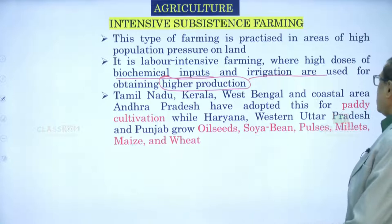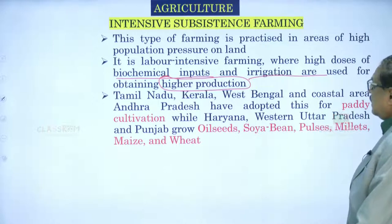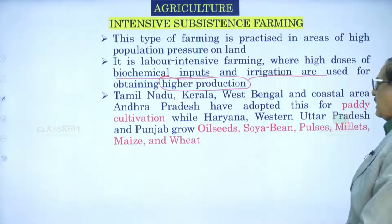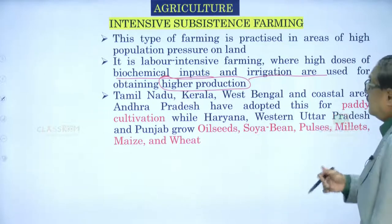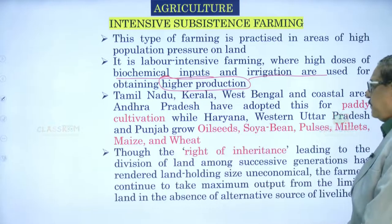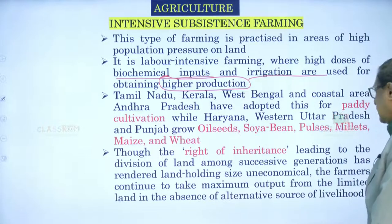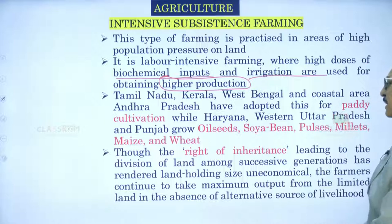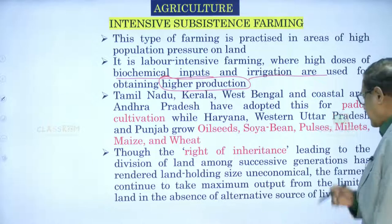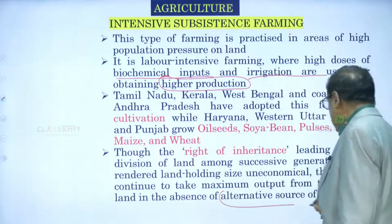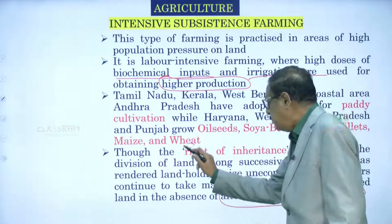Tamil Nadu, Kerala, West Bengal, and coastal Andhra Pradesh have adopted intensive subsistence farming for paddy cultivation, while Haryana, western Andhra Pradesh, and Punjab grow oilseeds, soybean, pulses, millets, maize, and wheat this way. The right of inheritance leading to division of land among successive generations has rendered land holdings uneconomically small, so farmers continue to take maximum output from limited land in the absence of alternative livelihoods.